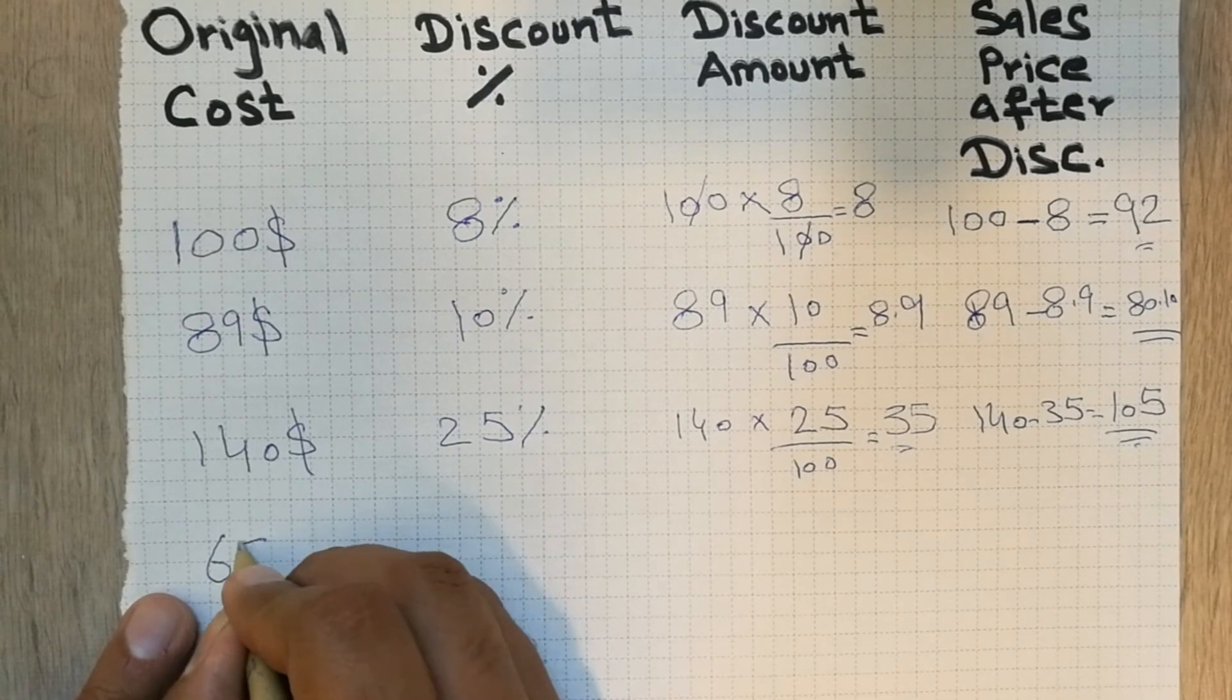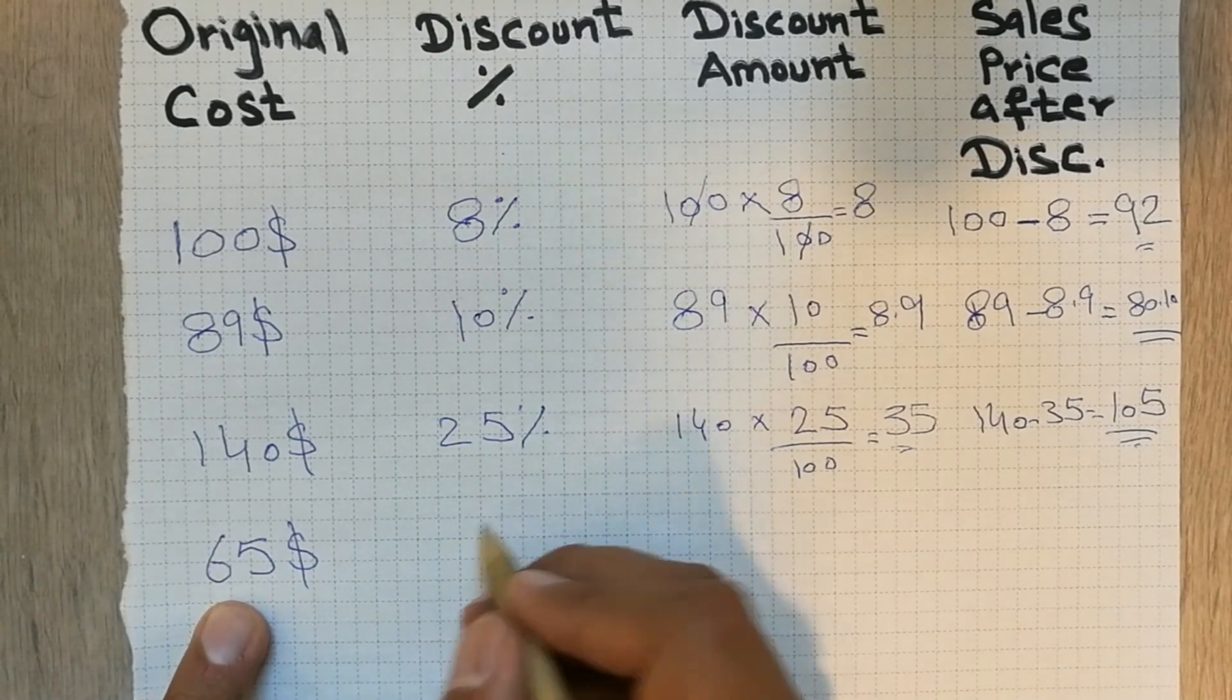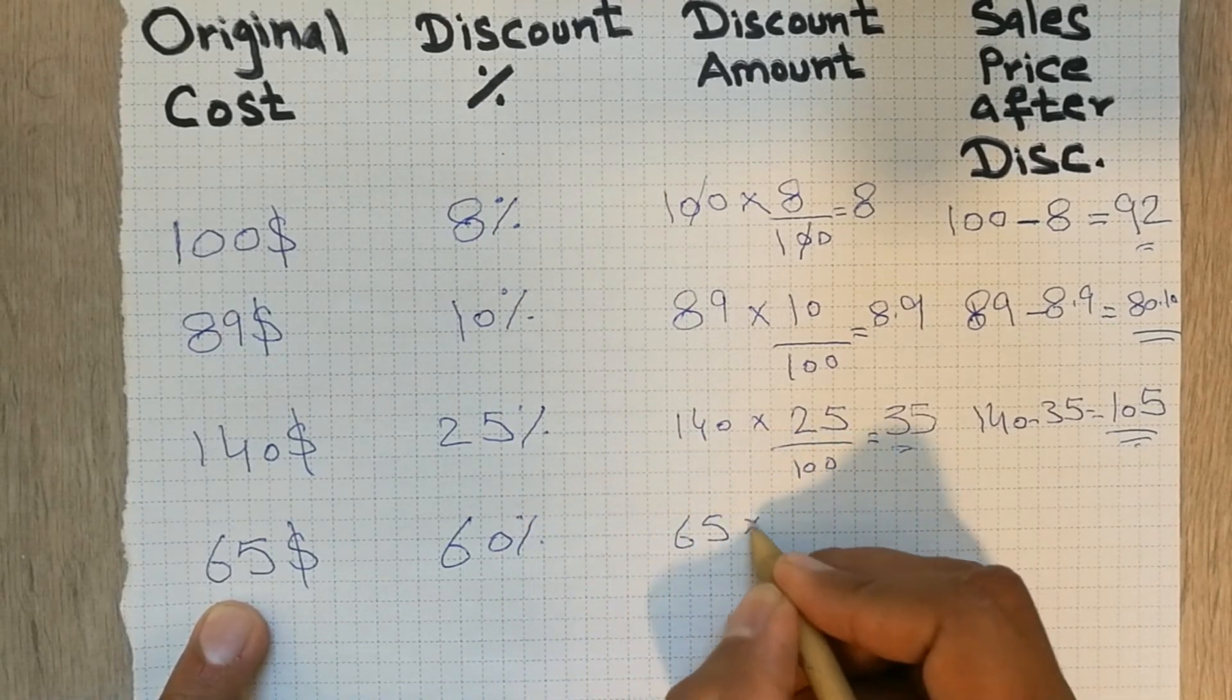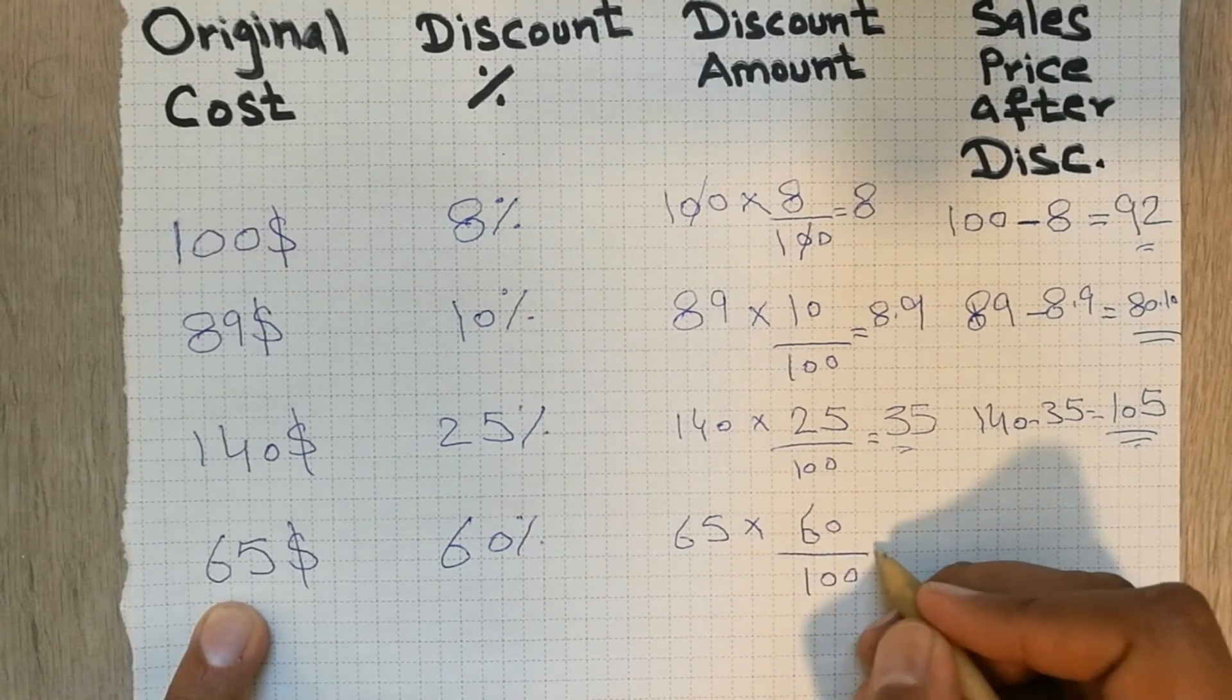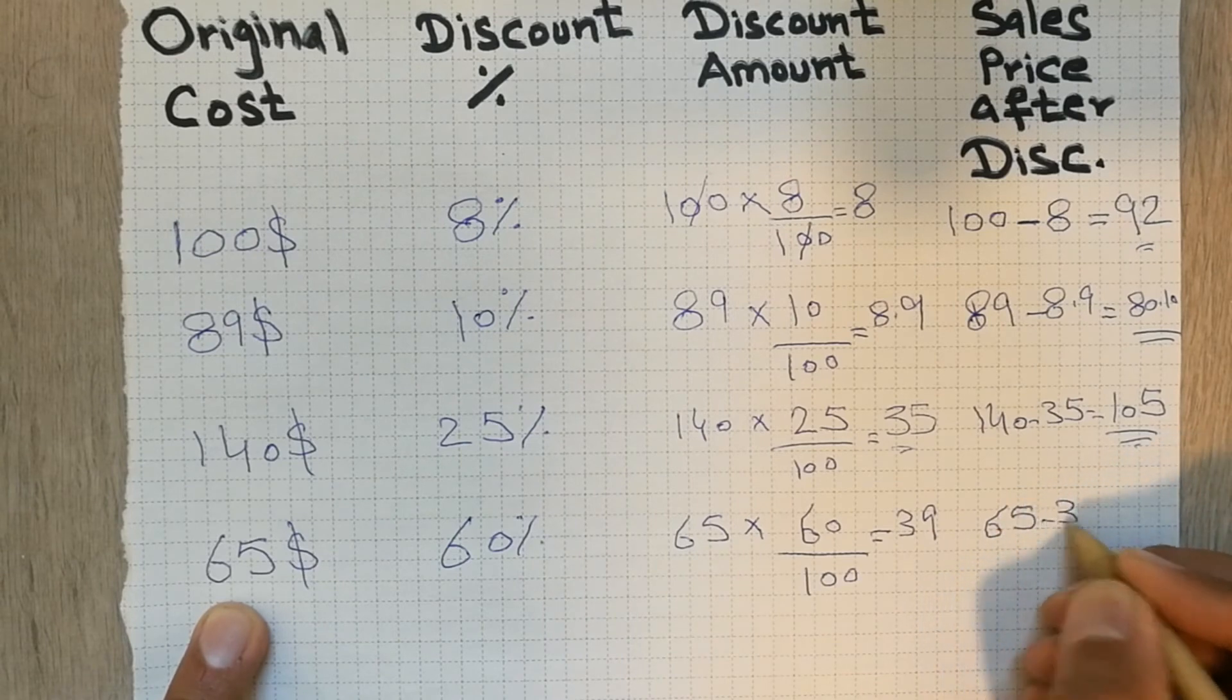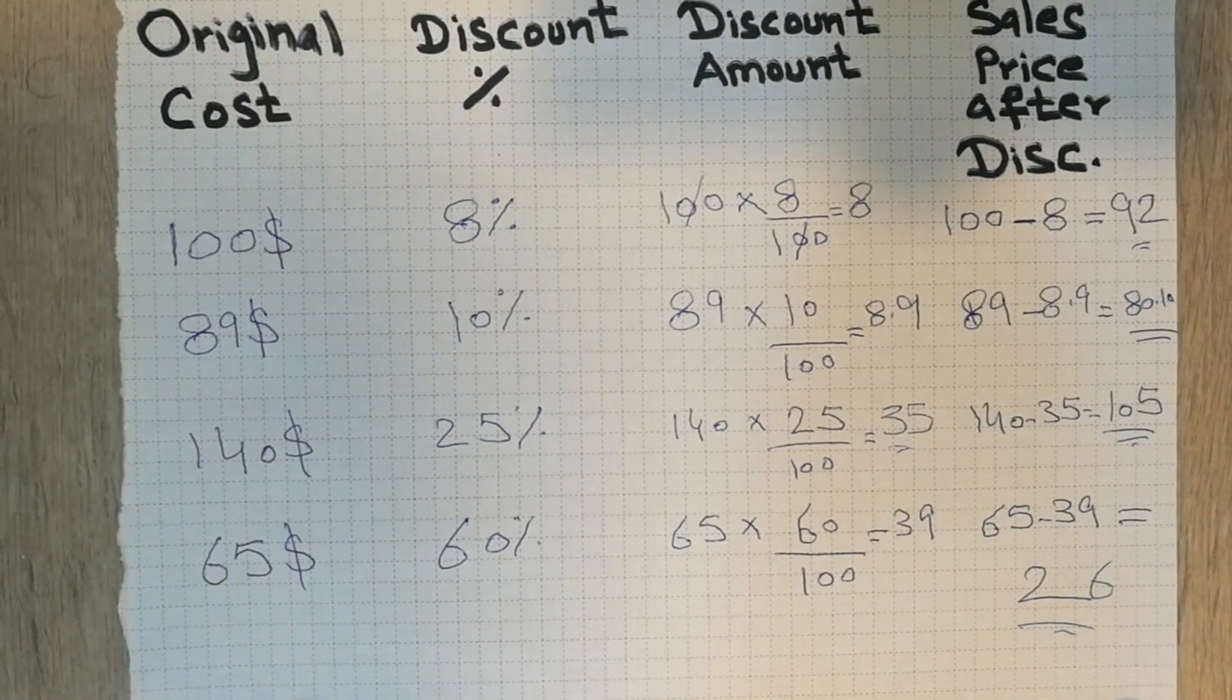Let's move to the last example. The cost is $65 and the discount is 60%, a big discount. So 65 multiply by 60 divide by 100, and the answer will be 39. So simply, 65 minus 39 equals 26. So 26 is the sales price after discount.